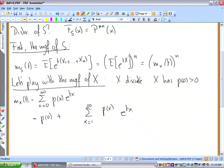What we do here is that we divide this by one minus p of zero and multiply in front of the sum. Why do we do that?